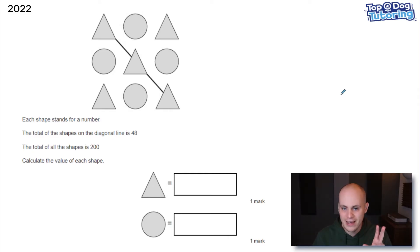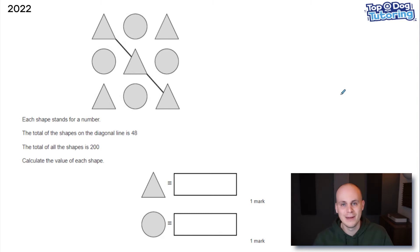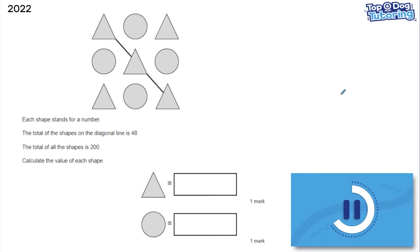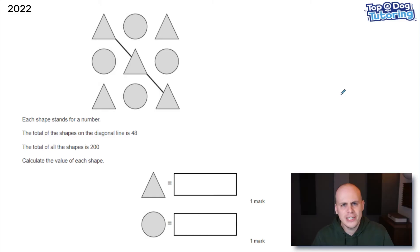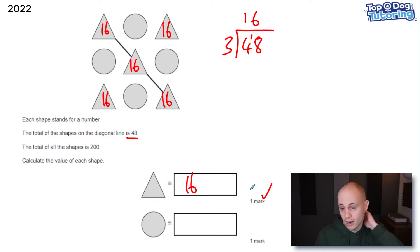Now let's go back in time to the 2022 SATs. I really loved this question because the maths involved is not too tricky — it was all about that lateral thinking, looking at the problem and knowing how to solve it. We know that the three triangles on the diagonal line equal 48. Since they're all the same triangle, I can do 48 divided by 3 and get 16. So straight away I know that all of the triangles are worth 16 — that's one mark.